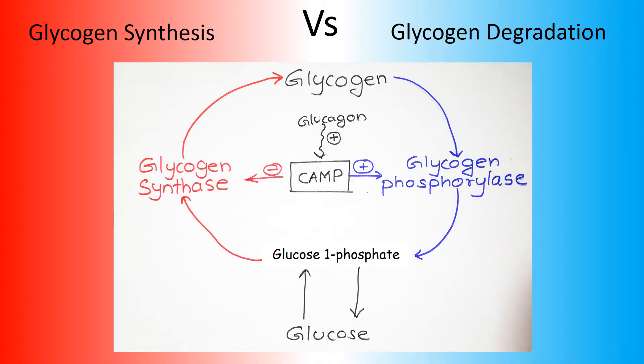Regarding glycogen metabolism: in the liver, glucagon increases cyclic AMP levels in the cell, which activates cyclic AMP-dependent protein kinase. This phosphorylates and inactivates glycogen synthase enzyme, so glycogen synthesis is inhibited. However, it also activates phosphorylase kinase, which in turn activates glycogen phosphorylase enzyme, so glycogenolysis is increased.